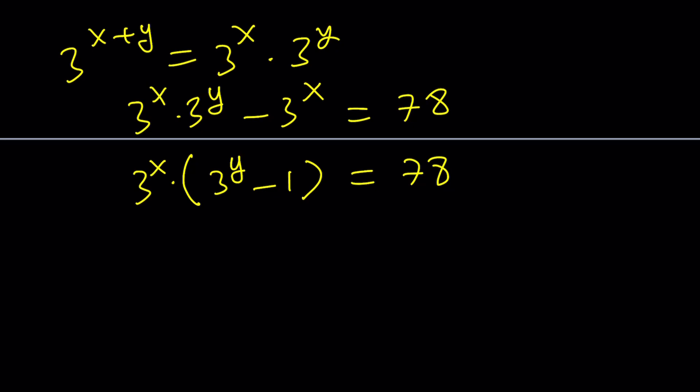I want to go ahead and take a look at what 3 to the x can be, because 3 to the x is a power of 3, so it can't be any ordinary number. So let's go ahead and do the prime factorization of 78. 78 is 2 times 39, and as you know, that can be written as 2 times 3 times 13. So it's a product of 3 prime numbers.